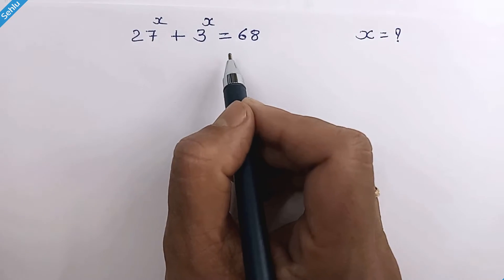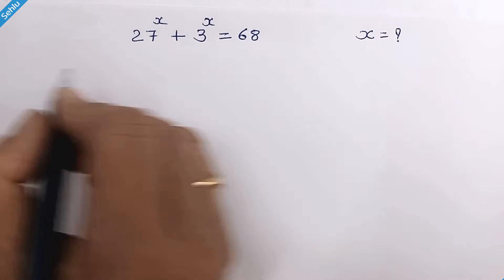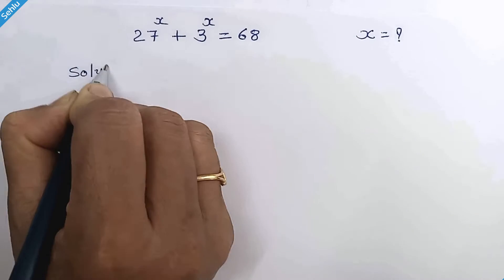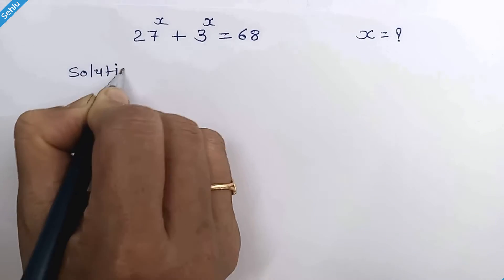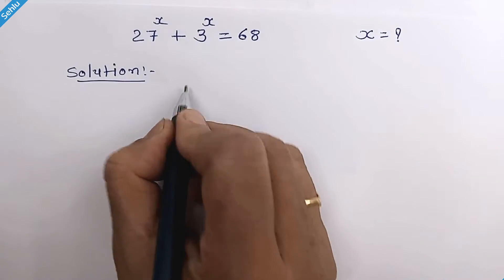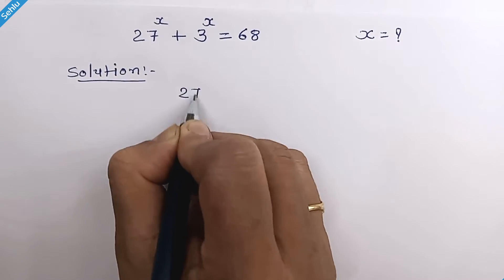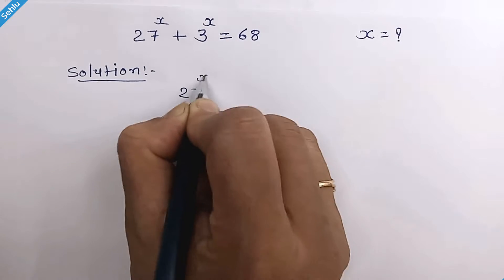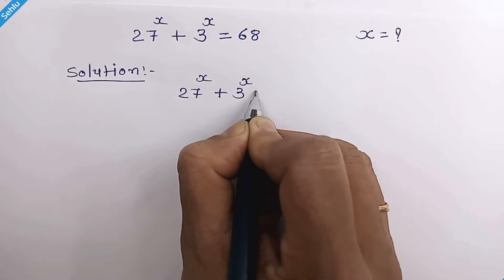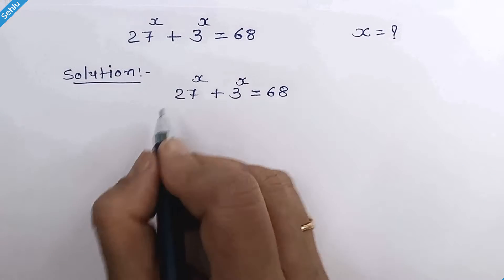Hello friends, let's solve this nice exponential problem. Our question is 27 raised to x plus 3 raised to x is equal to 68.